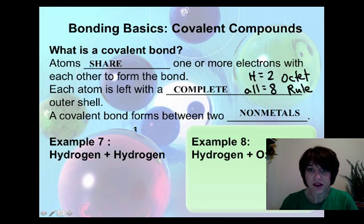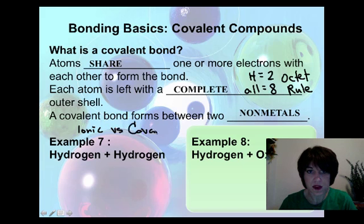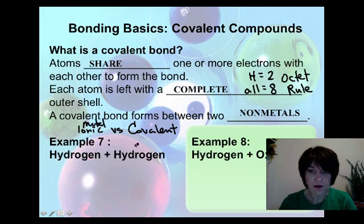Remember in our very first section, we talked about ionic versus covalent compounds? Those ionic compounds always started with a metal, except for ammonium substances.